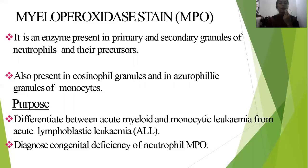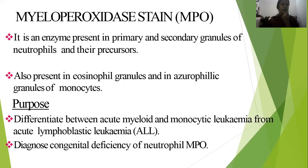Myeloperoxidase is an enzyme present in the primary and secondary granules of neutrophils and their precursors. It is also present in the azurophilic granules of monocytes. By making use of this myeloperoxidase enzyme present in the myeloid series of cells, we are able to demonstrate these cells.